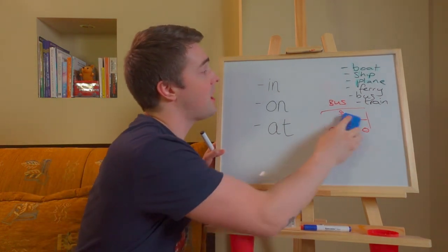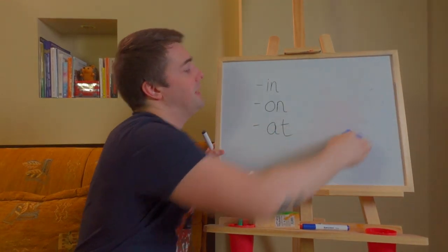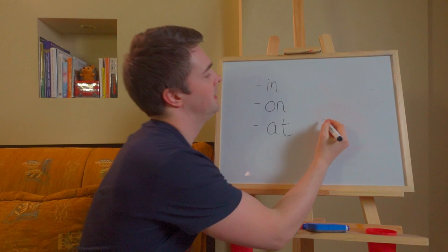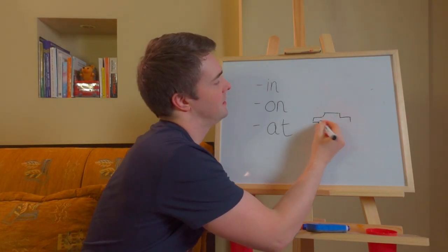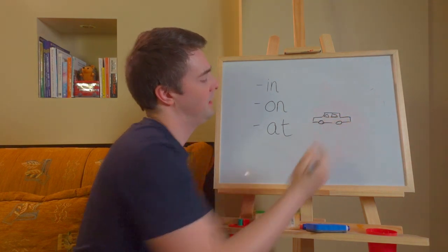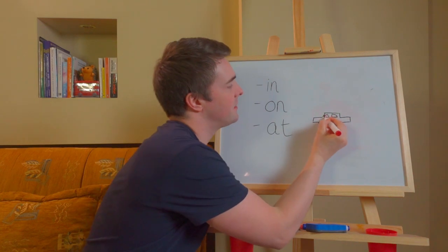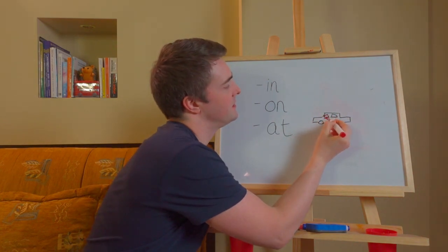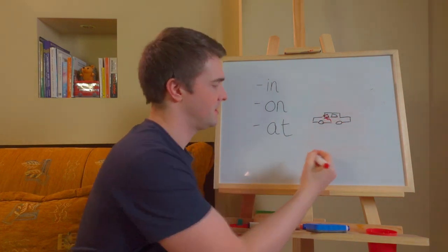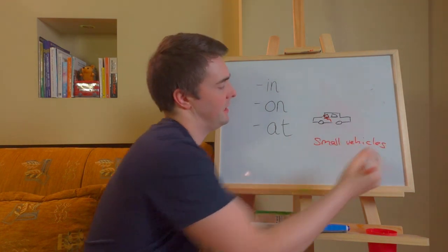Small vehicles like car. This is when I'm going to say I'm in. So here's my car. Some windows there. And I'm in. I'm in the car. I'm in it. Small vehicles. We use in.